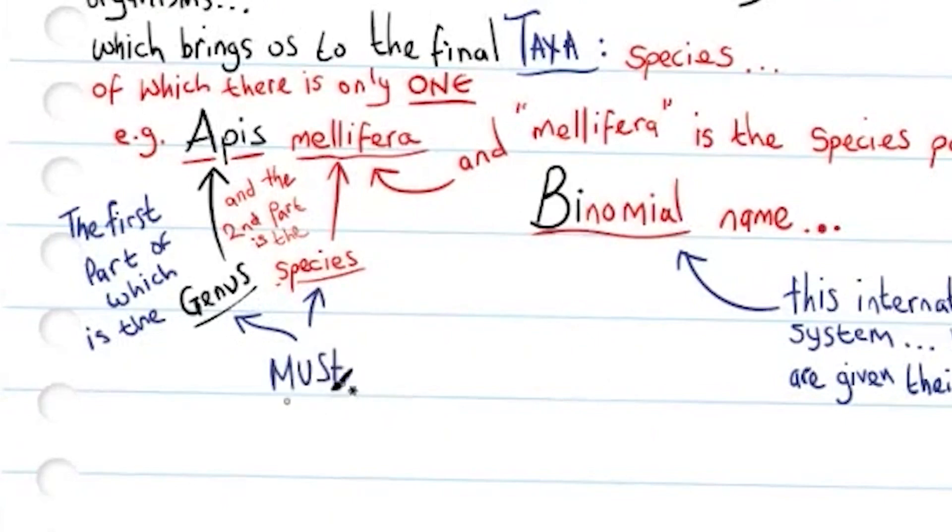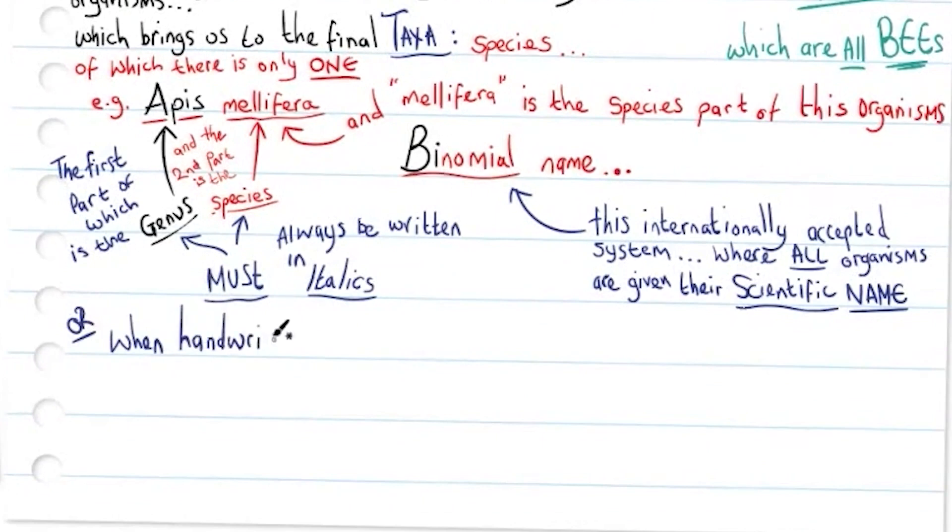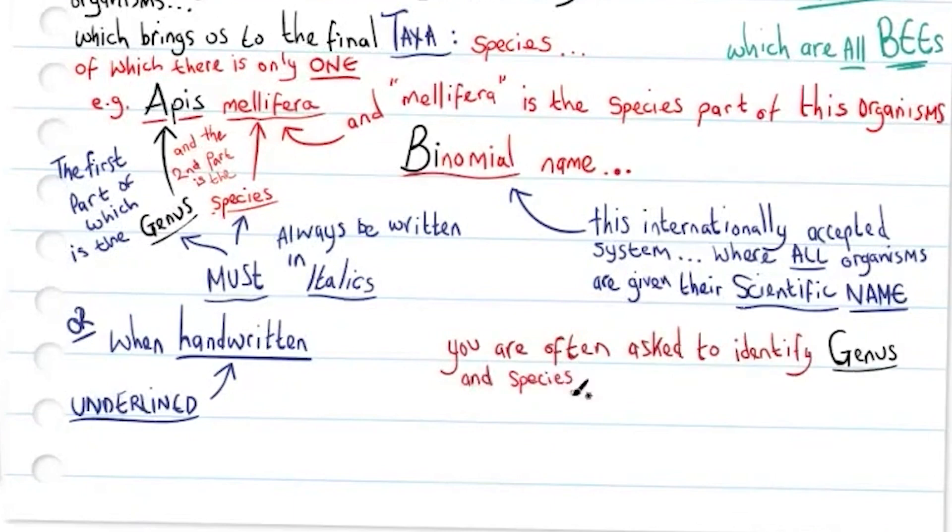Genus and species must always be written in italics, or when handwritten they must be underlined. You are often asked to identify genus and species in exams and to define the term species, which we will cover in the next lesson.